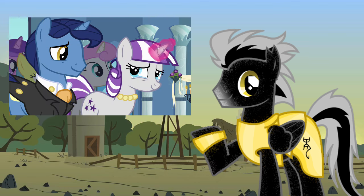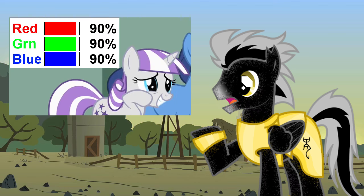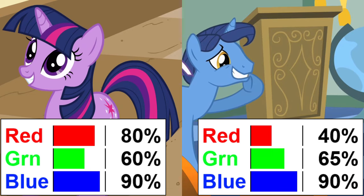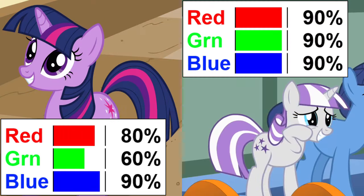Next, let's use Twilight Sparkle's family as an example. Twilight Velvet has 90% of each color, while Night Light has low amounts of red and moderate amounts of green. If you compare Twilight Sparkle's coat color with her father's, you'll see that their green and blue amounts are nearly identical. The red in Twilight's coat color, no doubt, came mostly from her mother.